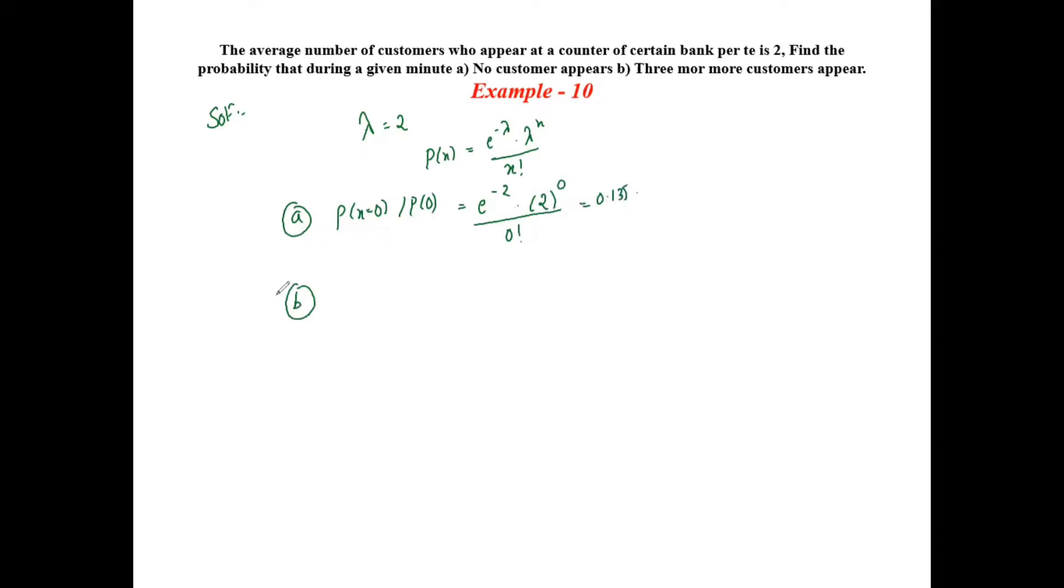Now part (b) asks for the probability that three or more customers appear. This means X is greater than or equal to 3. We can write this as 1 minus P(X less than 3).